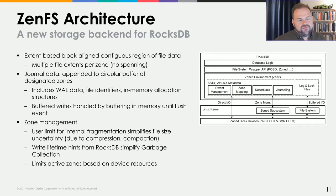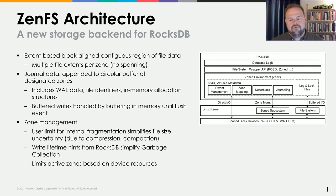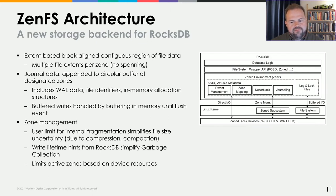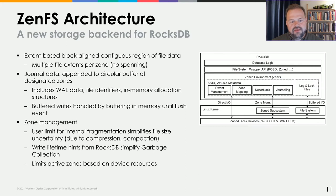For RocksDB and ZenFS, we built a new storage backend that hooks in instead of the POSIX backend currently available in RocksDB. The storage backend is extent-based, meaning files from RocksDB's perspective are mapped onto extents, and extents are mapped onto zones. There can be multiple extents within a zone, but an extent cannot span multiple zones. There is also journal data — write-ahead log data, file identifiers, memory allocation structures, and so on. For zone management, we handle file size changes due to compression and compaction, write lifetime hints from RocksDB to simplify garbage collection, and limits on how many active resources can be available at any point in time.